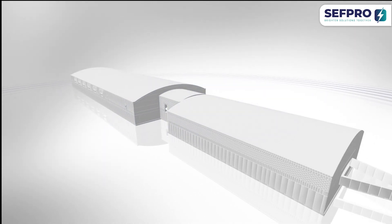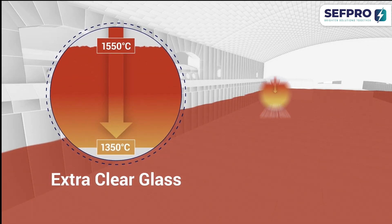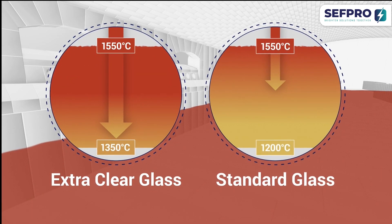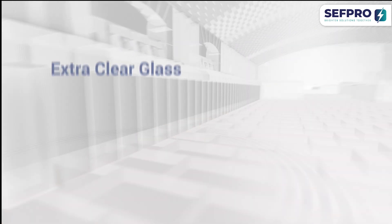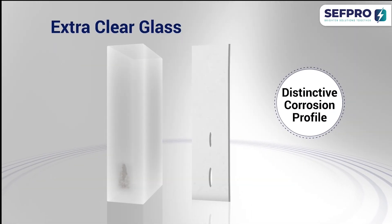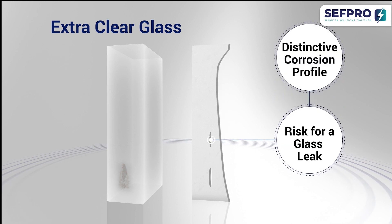When you produce extra clear glass, you know about higher temperature transmission compared to standard glass. The consequence: higher glass temperature near the furnace bottom leads to a distinctive corrosion profile. This increases the risk for a catastrophic glass leak.